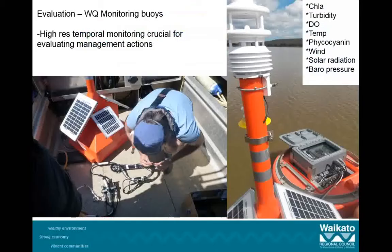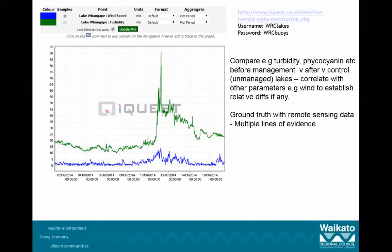When you combine these tools with real-time monitoring technologies — like Chris McBride's monitoring buoy at Lake Wahee — you've got a range of parameters to correlate with management actions such as fish removal. These tools are absolutely critical for evaluating whether we're being effective. For instance, this plot shows turbidity and wind speed. If you've got a lake not managed for carp and one that is, both with monitoring buoys, does turbidity during periods of low wind decrease in response to fish removal? It helps partition out the effects of each different stressor.